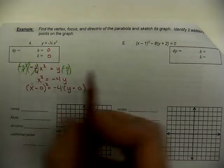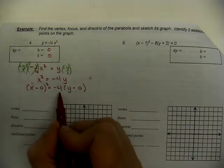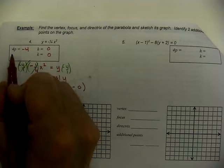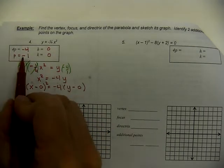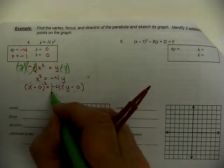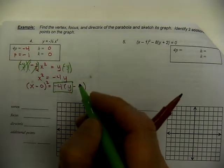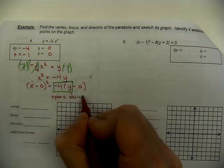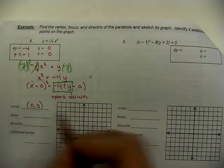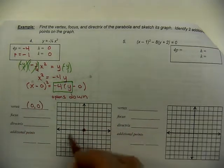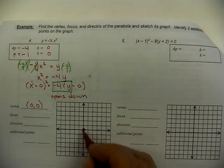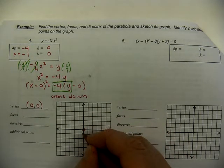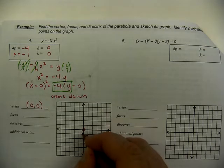So h is zero, k is zero. The coefficient negative four is not P — that's 4P. Setting 4P equal to negative four, P is negative one. We see a negative paired with Y, so we interpret that as opening down. The vertex is at (0, 0). It opens down, so the focus is underneath — one unit down — at (0, −1). Label vertex V and focus F. The directrix is one unit above: y = 1.